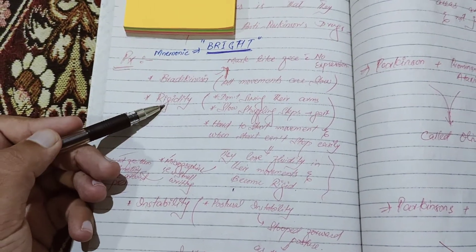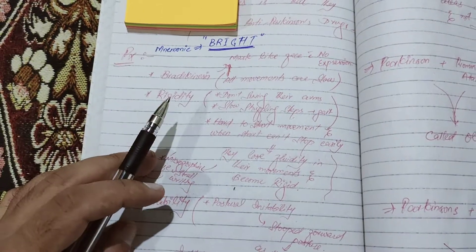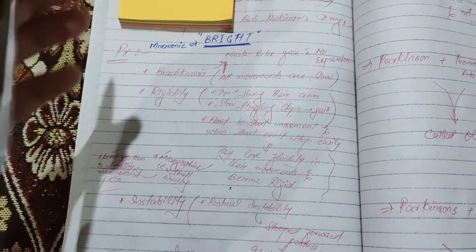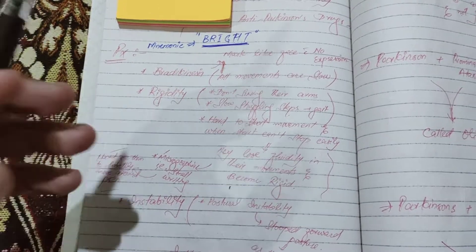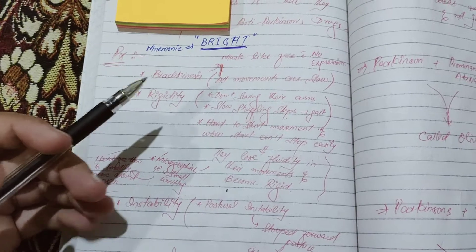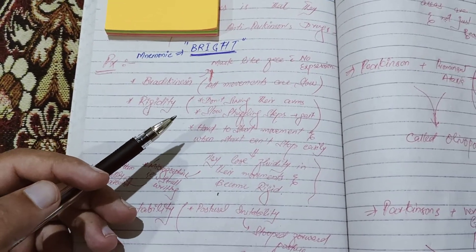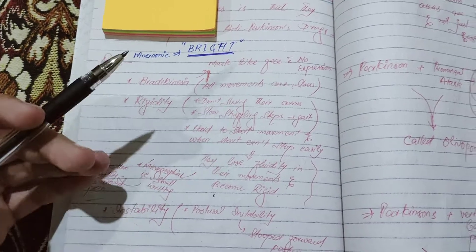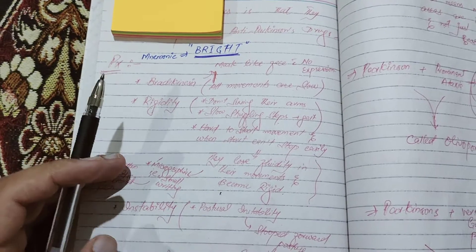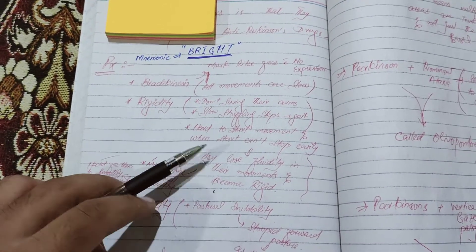The next letter, R, is for rigidity. Their bodies are rigid, and you can tell because when they are moving, they don't swing their arms. A normal patient will swing their arms when walking, but these patients have rigid bodies and won't swing their arms. Moreover, they have slow, shuffling steps — their gait consists of slow, shuffling steps.